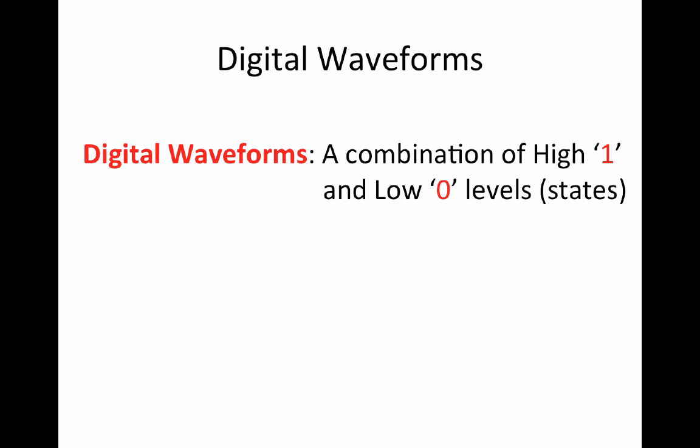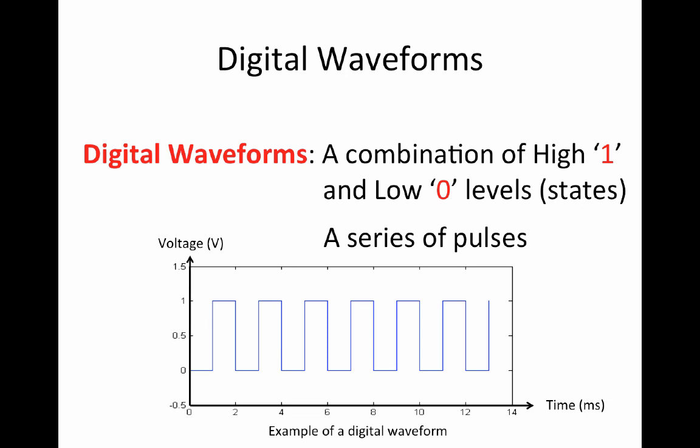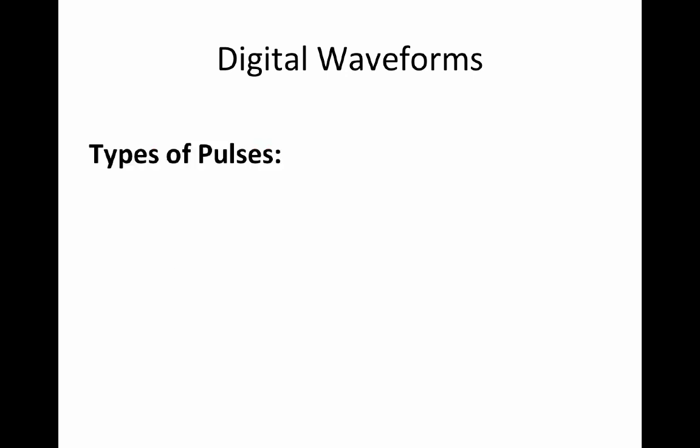Digital waveforms. Digital waveforms consist of a number of high and low levels or states changing back and forth. Waveforms are made up of a series of pulses. There are two types of pulses.